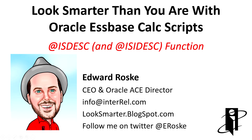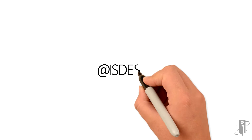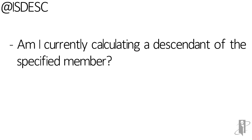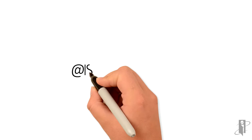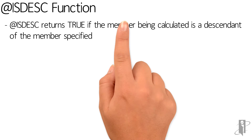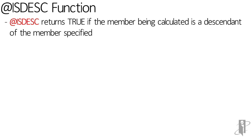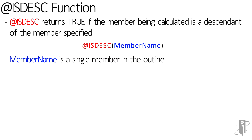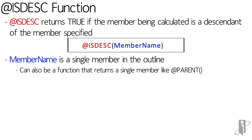Welcome to the IS DESC and IS IDESC functions. IS DESC, otherwise known as IS descendants, tells you if the member currently being calculated is a descendant of the member that you specify. To check if the member being calculated is a descendant of some specified member, just say IS DESC and then either a member name or a function that returns a single member name, like at parent or at ancestor.